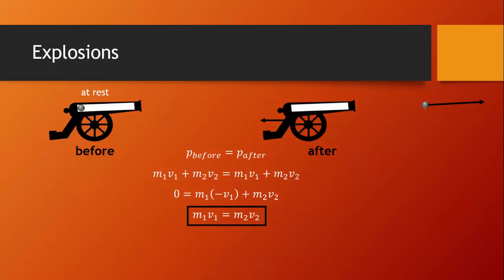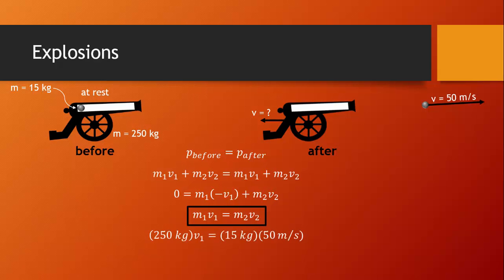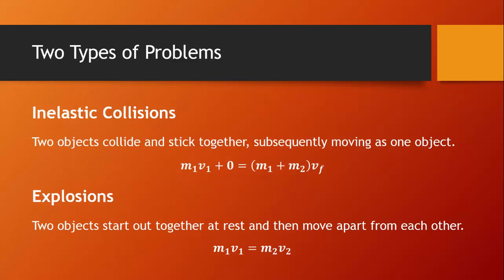This is a very important equation. Let's solve for the recoil velocity of the cannon. The cannon has a mass of 250 kg, the cannonball has a mass of 15 kg, and after the explosion the cannonball is moving 50 meters per second. Plugging in: 250 kg times V1 equals 15 kg times 50 meters per second. We find that the velocity of the cannon is 0.33 meters per second — that's the recoil velocity. The equation for explosions is M1v1 equals M2v2.